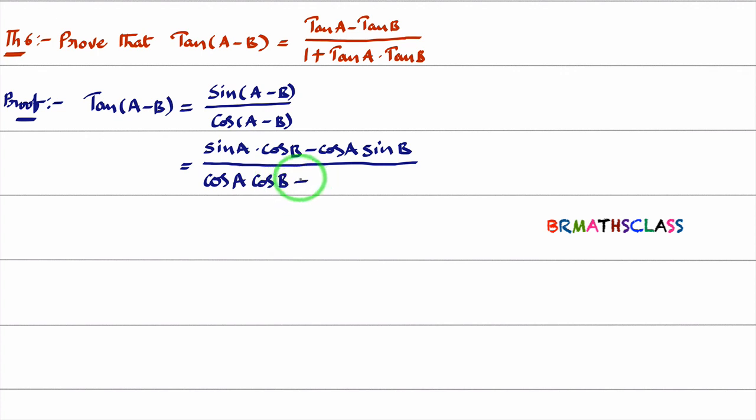cos A cos B plus sin A sin B. Actually, we want this part. To get this RHS part, we have a small trick. You observe here, this place. What is there here? Here 1 is there. That means at this part, I want 1.